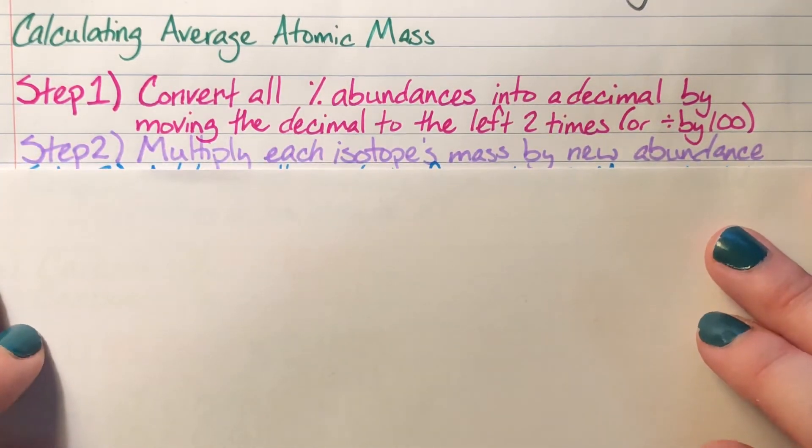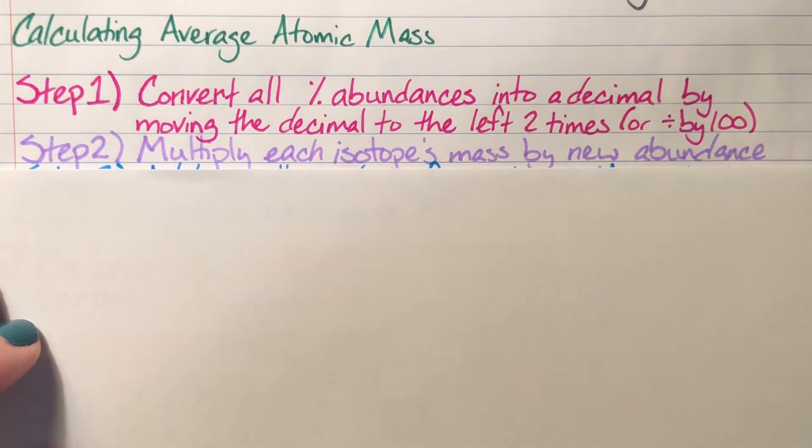Step two is multiplying each different isotope's mass—that's the mass number—by the new abundance we just found, the decimal form of the abundance.